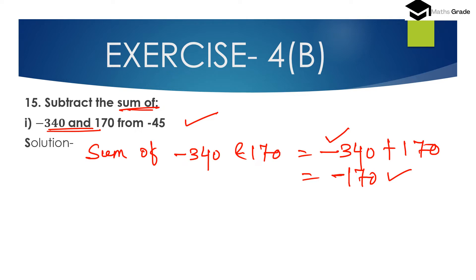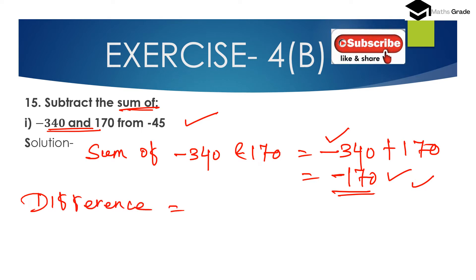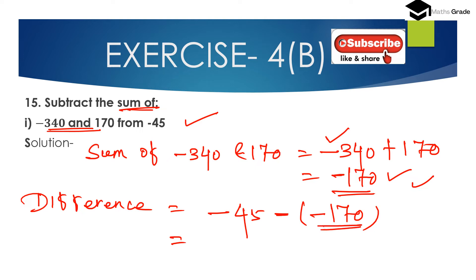Now we have to subtract the sum from minus 45. The sum of minus 340 and 170 is minus 170. Now we have to subtract minus 170 from minus 45. So: minus 45, minus of minus 170. Minus of minus is plus, so this becomes minus 45 plus 170.